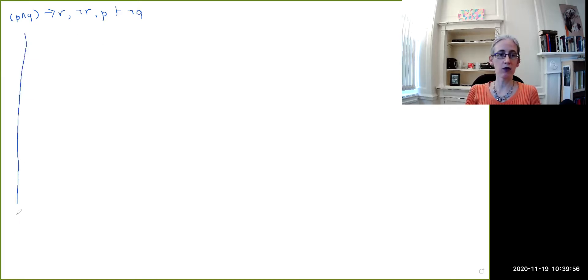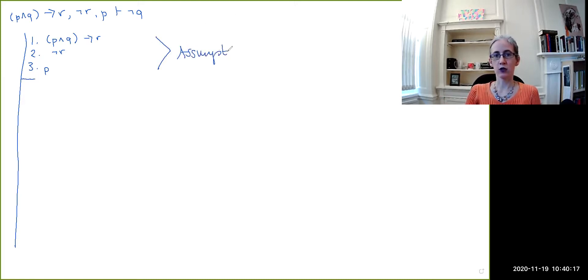So the very first thing that you do in a proof is you write down all of your initial assumptions, one on each line, and these are going to be annotated with assumption. So we've got P and Q implies R, not R, and P, and we draw the little line underneath just to say that all of these are kind of simultaneously assumed. So these are our assumptions.